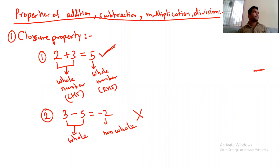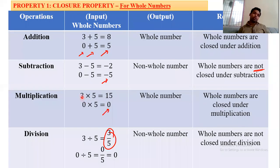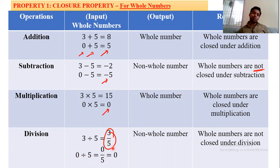For multiplication — two whole numbers multiplied always give a whole number. Three fives are fifteen, zero into five is zero. Both inputs are whole numbers and the output is also a whole number, so whole numbers are closed under multiplication. Similarly, in case of division, 3 divided by 5 gives 3/5, which is not a whole number. Zero divided by 5 gives zero, which is a whole number, but this doesn't happen in all cases. So every time the output is not a whole number, hence whole numbers are not closed under division.